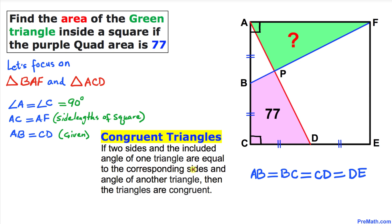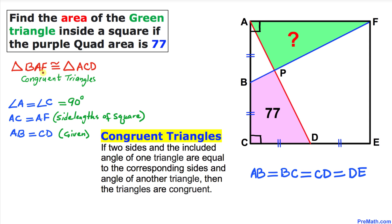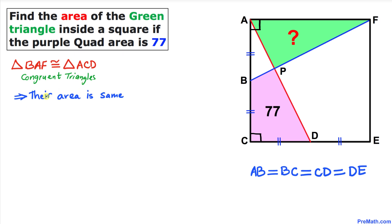Here's the definition of congruent triangles: if two sides and the included angle of one triangle are equal to the corresponding sides and angle of another triangle, then the triangles are congruent. Thus we conclude that triangles BAF and ACD are congruent triangles, so their areas are also going to be the same — area of triangle BAF equals area of triangle ACD.